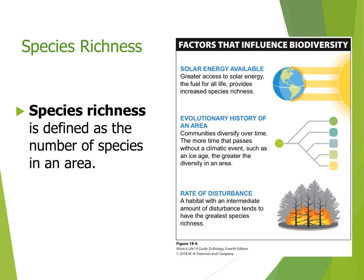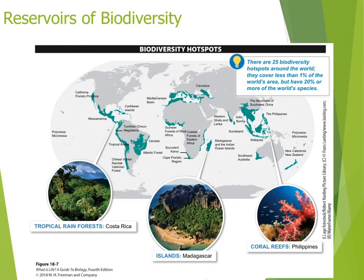The third factor is the rate of disturbance. It may seem counterintuitive, but disturbances like forest fires, tsunamis, volcanic eruptions, and floods, when they happen at an intermediate frequency, actually support higher biodiversity. An intermediate level of disturbance - not so high that all species are wiped out, and not so low that competitively dominant species drive off less competitive ones - produces the highest species richness.